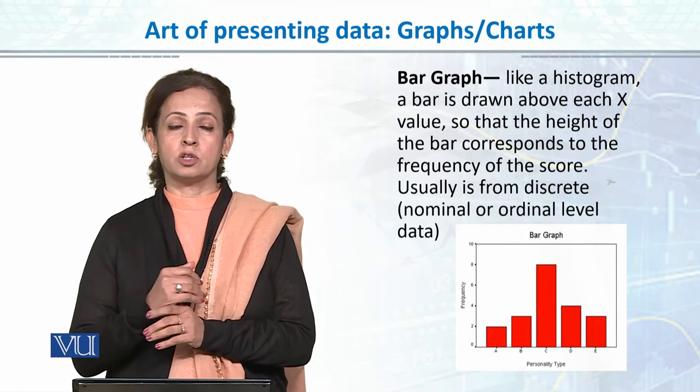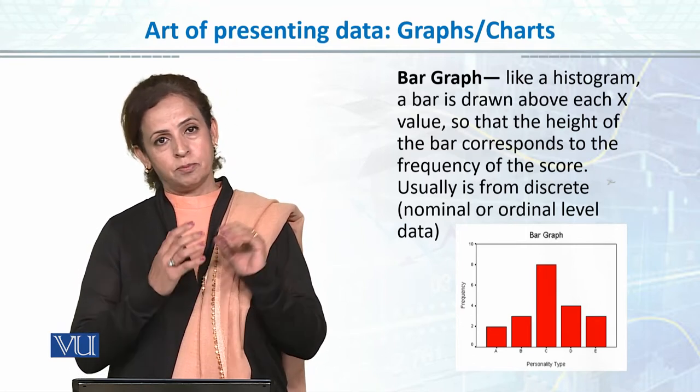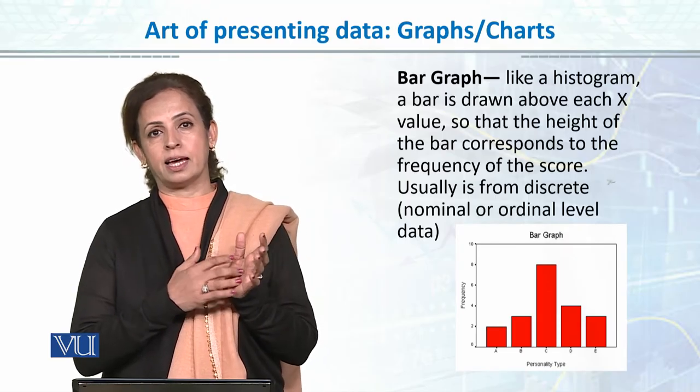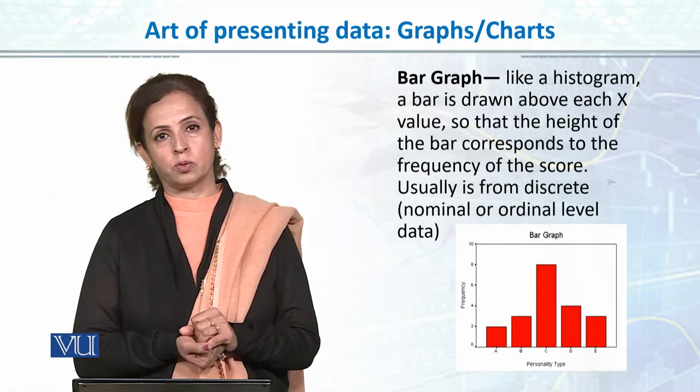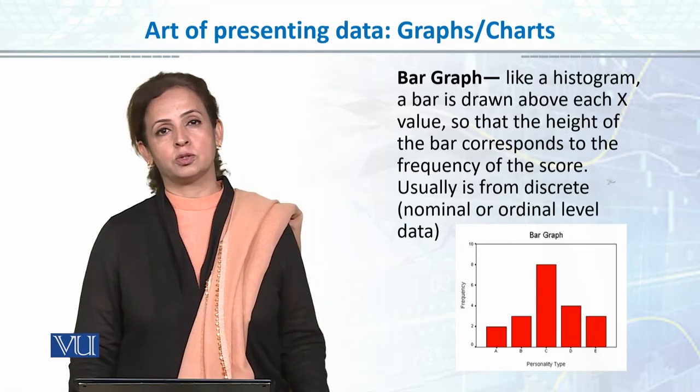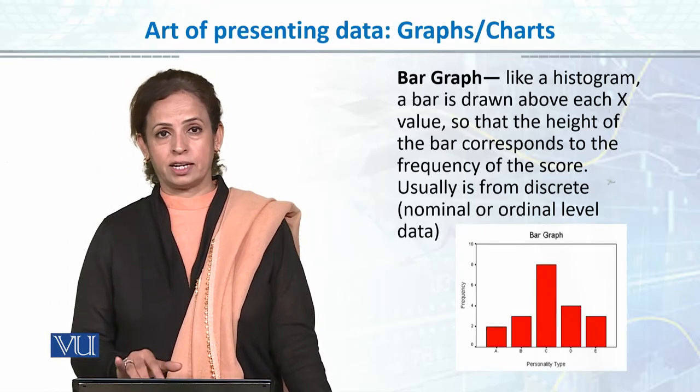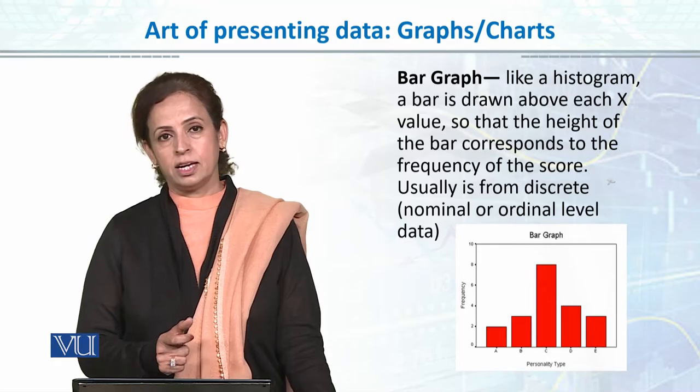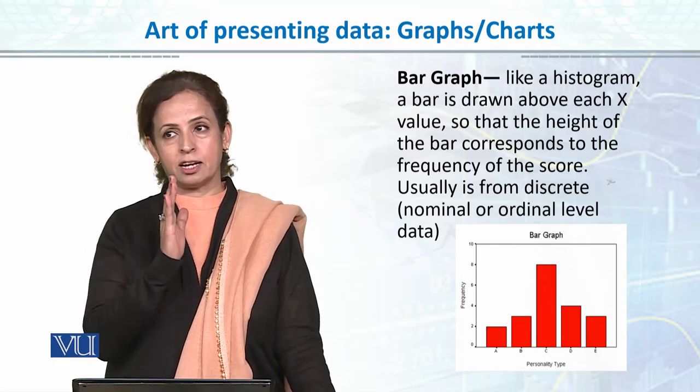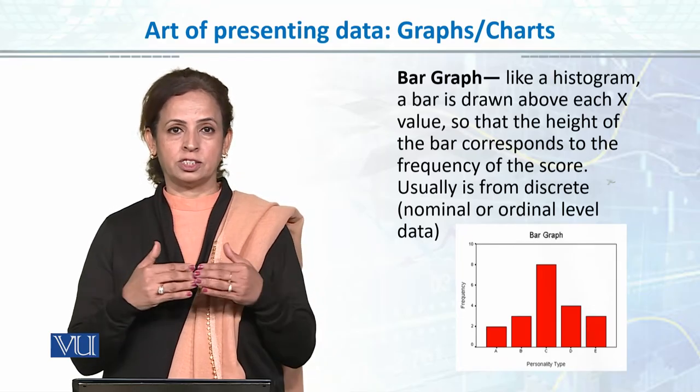Our variables are nominal and ordinal, and we can present this data well. The bar graph is similar to a histogram, but the difference is that our data is nominal and ordinal. Since it is discrete data, our rectangular bars are not adjacent to each other.